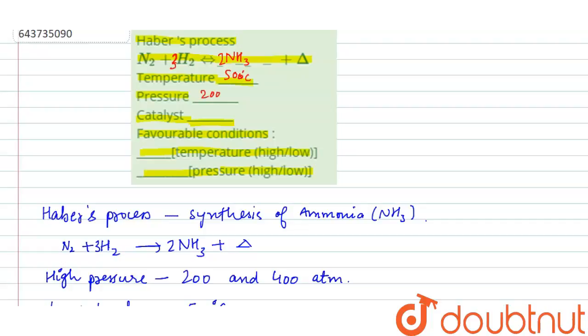Pressure will be 200 and 400 atmospheres. Catalyst will be iron. So favorable conditions, according to Le Chatelier, the temperature will be low and the pressure will be high. So this is the required answer. Thank you.